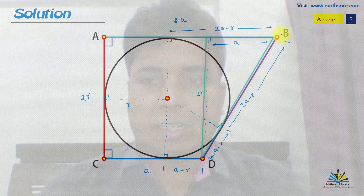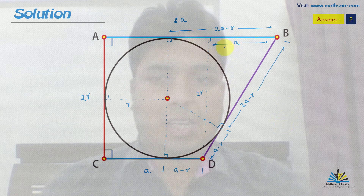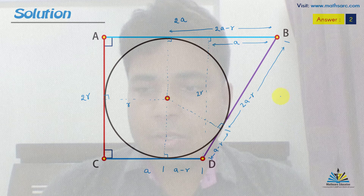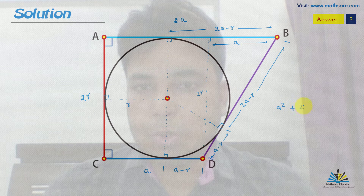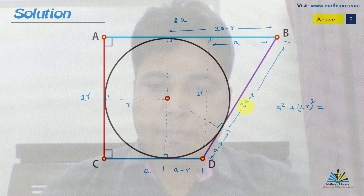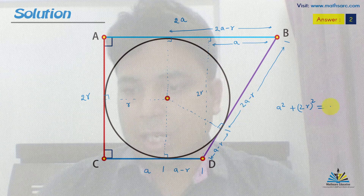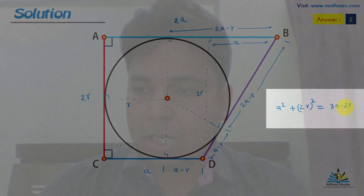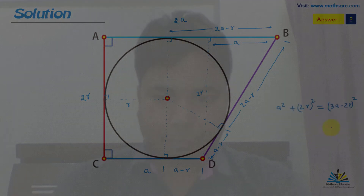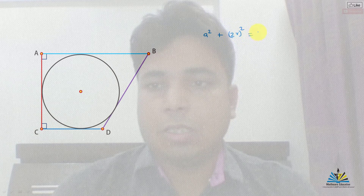You can observe the right-angle triangle as shown here. Pythagoras theorem will apply at this moment. So you can write the Pythagorean theorem as: a squared plus (2R) squared is equal to (3a minus 2R) squared.